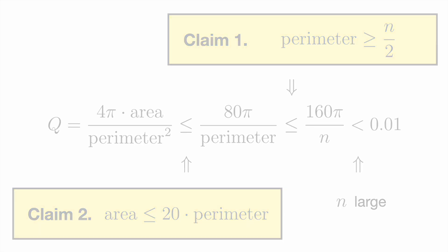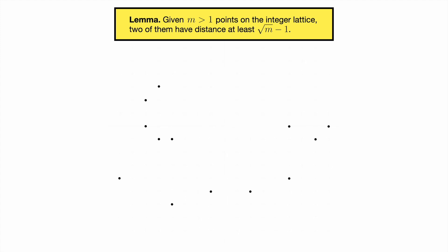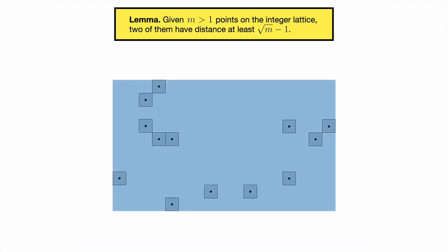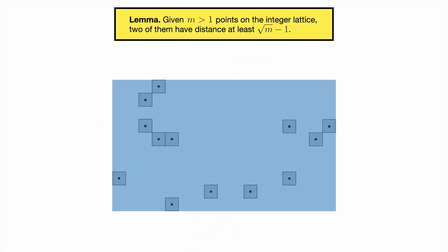Let's start with claim one. For this, we'll use a fact about something called the integer lattice, namely the points in the plane with integer coordinates. It turns out that for any m points in the integer lattice, two of these points will be at least square root m minus 1 apart. In other words, only so many points from the integer lattice can fit in a region of small diameter. To see this, take any m points from the integer lattice and view each one as the center of a unit square. Now take the smallest rectangle containing these squares. If necessary, we can rotate everything by 90 degrees so that the width is at least the height.